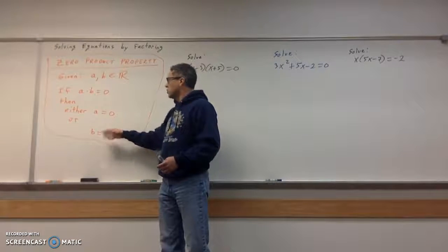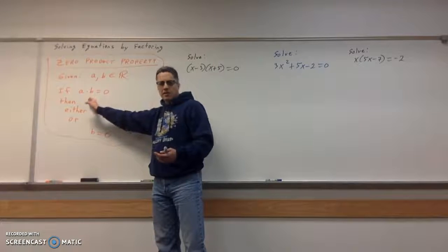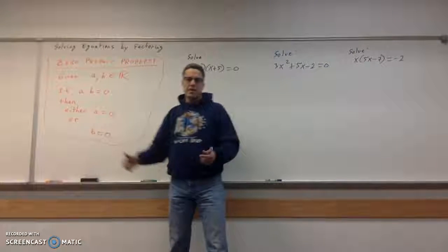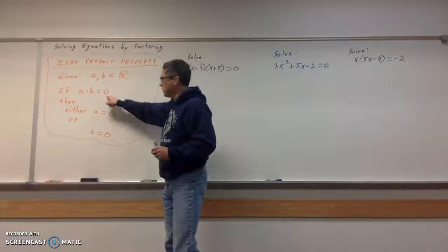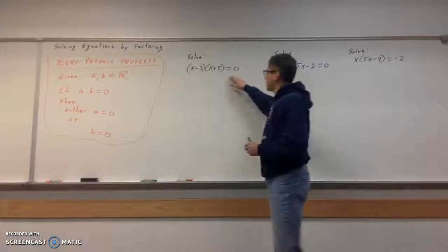Zero times a would be zero. So we're going to use that idea as we solve here. The key being one side needs to be a zero. And I've already got that on this first problem.